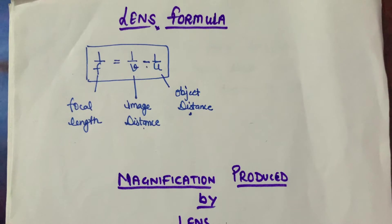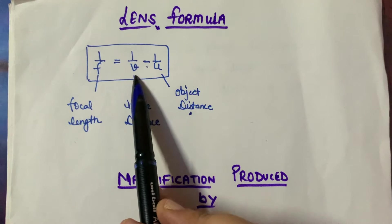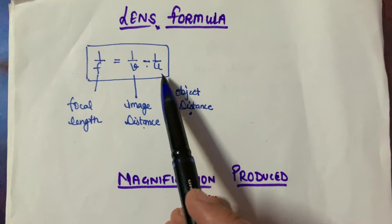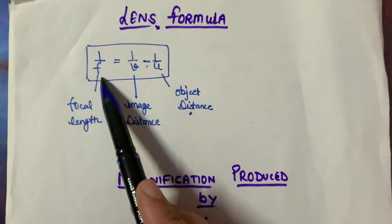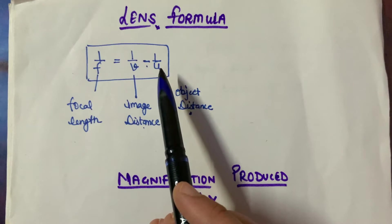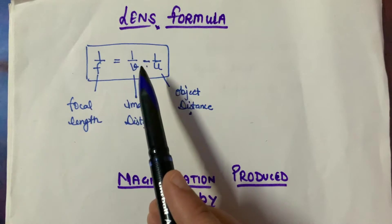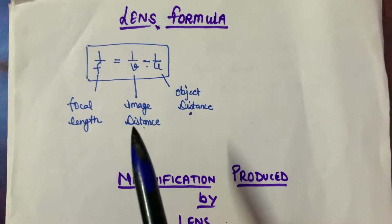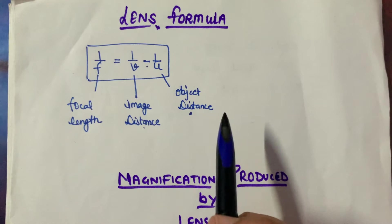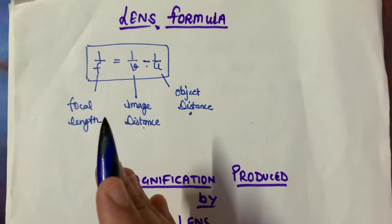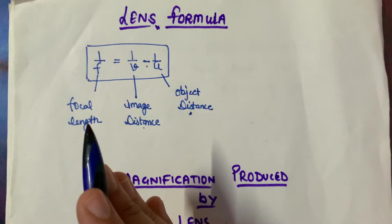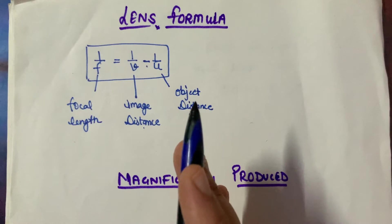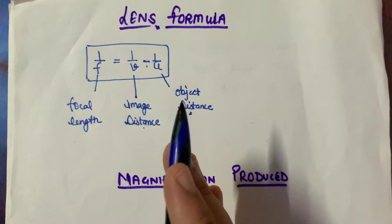What are we going to solve in numericals? If we have image distance, which we have to symbolize; object distance, which we have to symbolize; focal length, which we have to symbolize; magnification and height — so if we have to calculate these things accurately, then we have to apply those signs. All things on the left side are negative and on the right side are positive. We will use sign conventions like this.